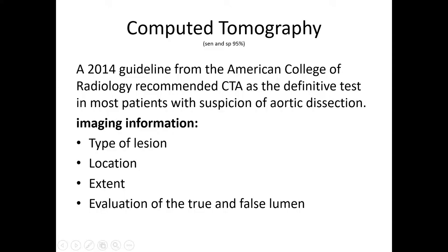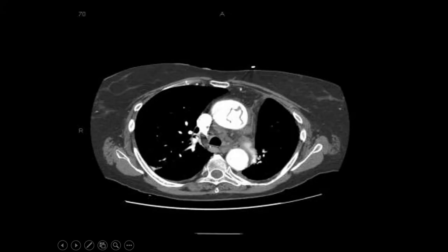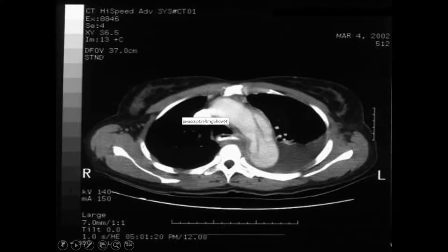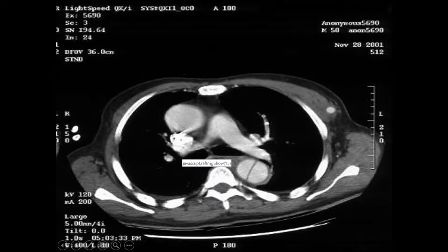CT scan is very important because it answers many of the questions about imaging requirements for the surgeon. Its sensitivity and specificity are around 95%. It provides information about the type of lesion, location, extension, and evaluation of the true and false lumen. You can see on CT the ascending aorta with a flap, the aortic arch with a tear, and another tear in the descending ascending aorta.